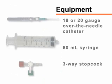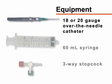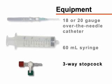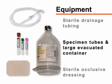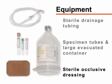For the collection of pleural fluid, you will need an 18 to 20 gauge over-the-needle catheter, a 60 milliliter syringe, and a three-way stopcock. You will also need sterile drainage tubing, specimen tubes and a large evacuated container, and a sterile occlusive dressing.